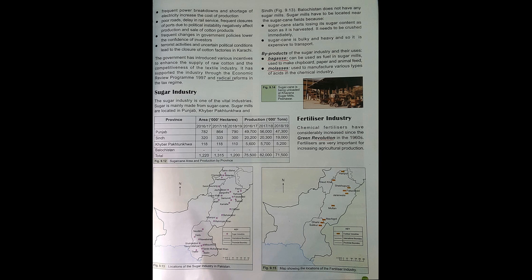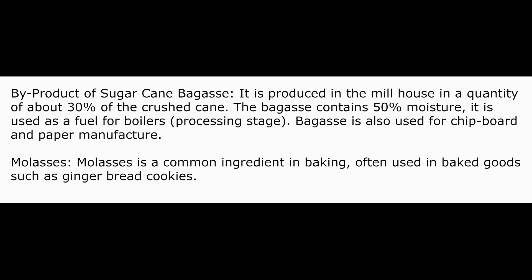The byproducts of the sugar industry include bagasse. Bagasse can be used as fuel in sugar mills, to make chipboard, paper, and animal feed. It is produced in the mill in a quantity of about 30% of the crushed cane, and it contains 50% moisture. It is used as fuel for boilers during the processing stage.